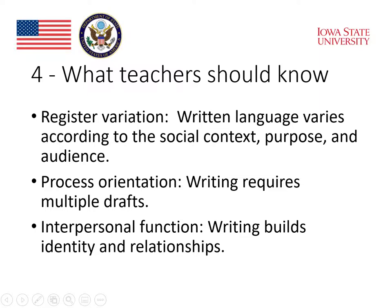The three critical aspects of writing are register variation, process orientation, and interpersonal function. Register variation refers to the fact that written language varies according to the social context, purpose, and audience. We saw the example of how the language choice has to be different depending on whether you're talking about your research to a friend or introducing your research to a professional audience of journal readers.